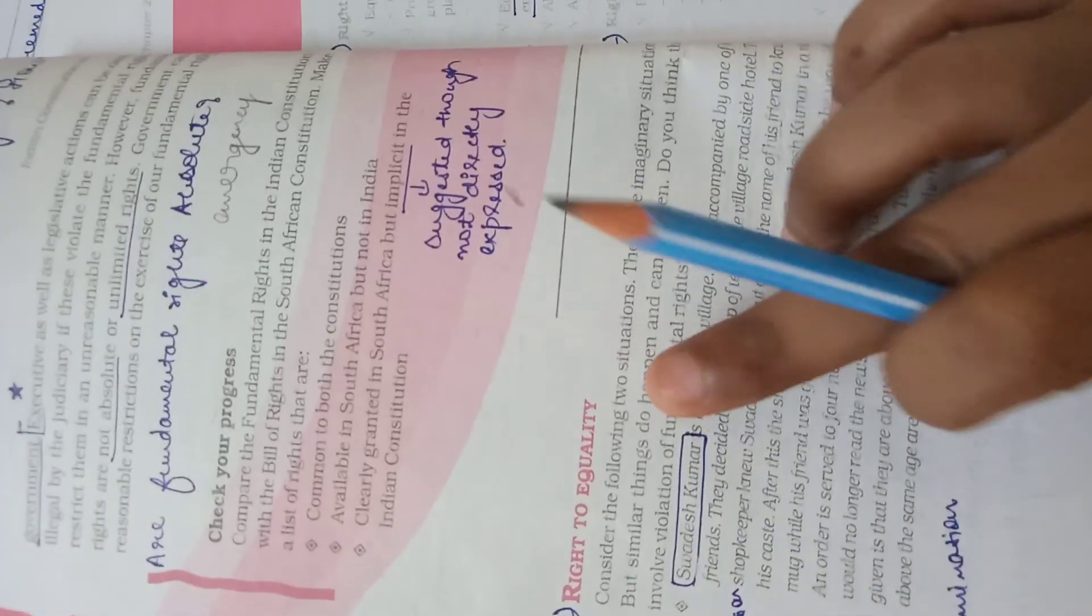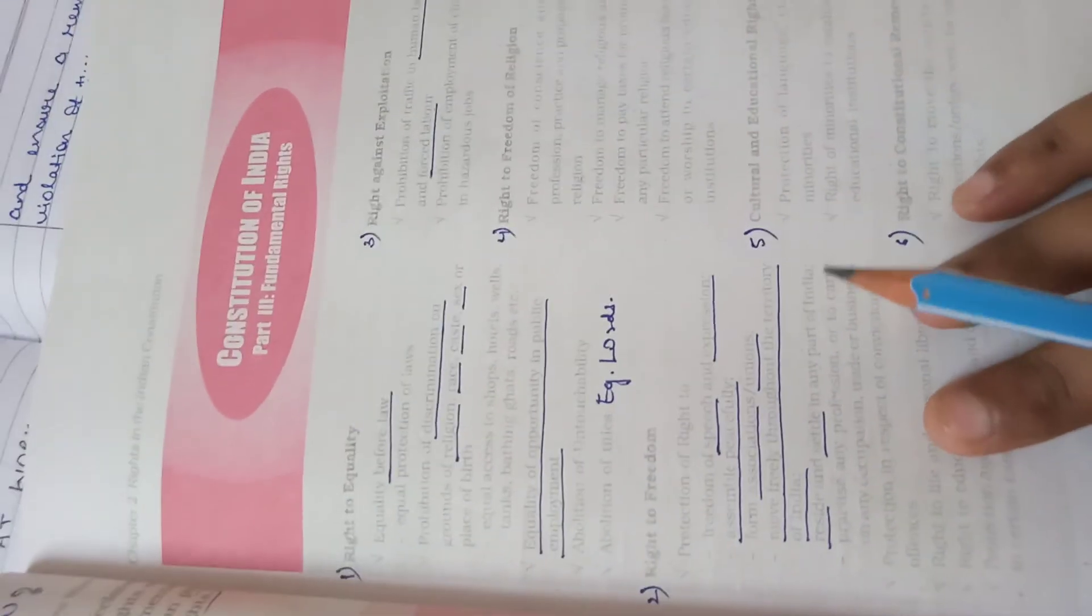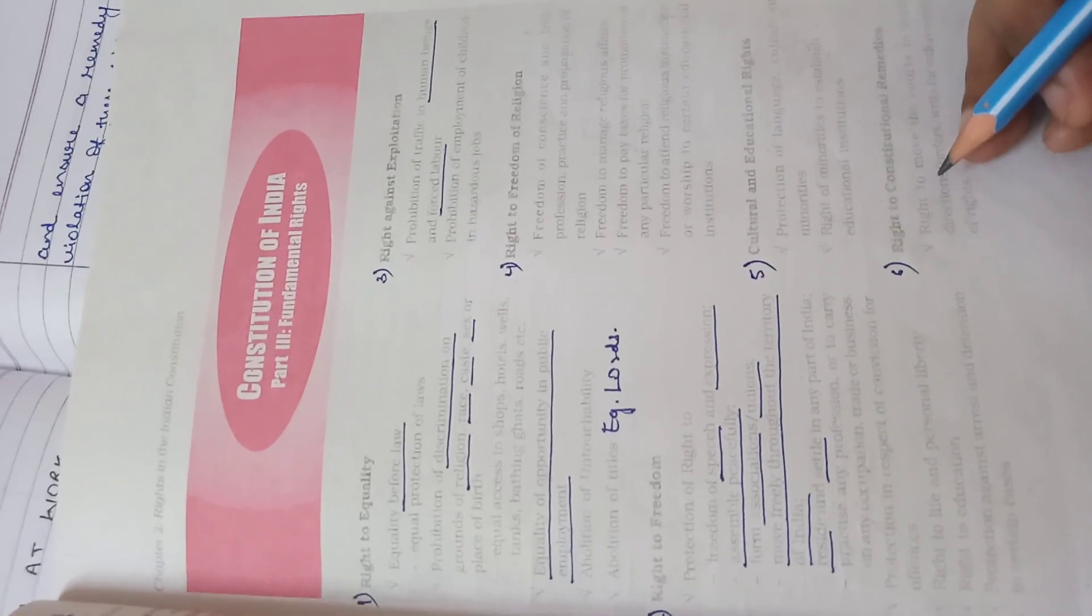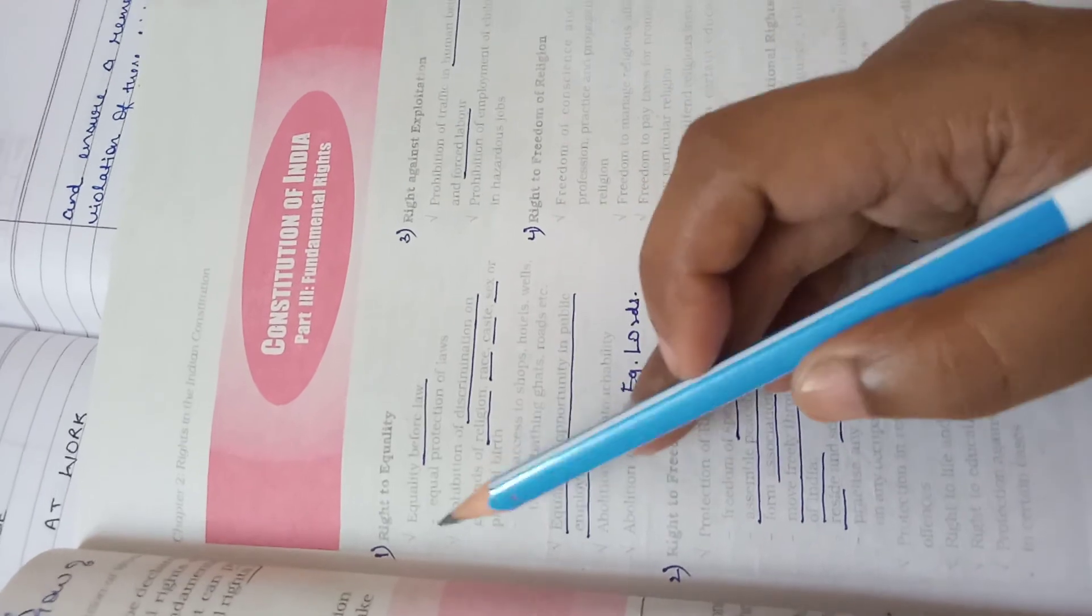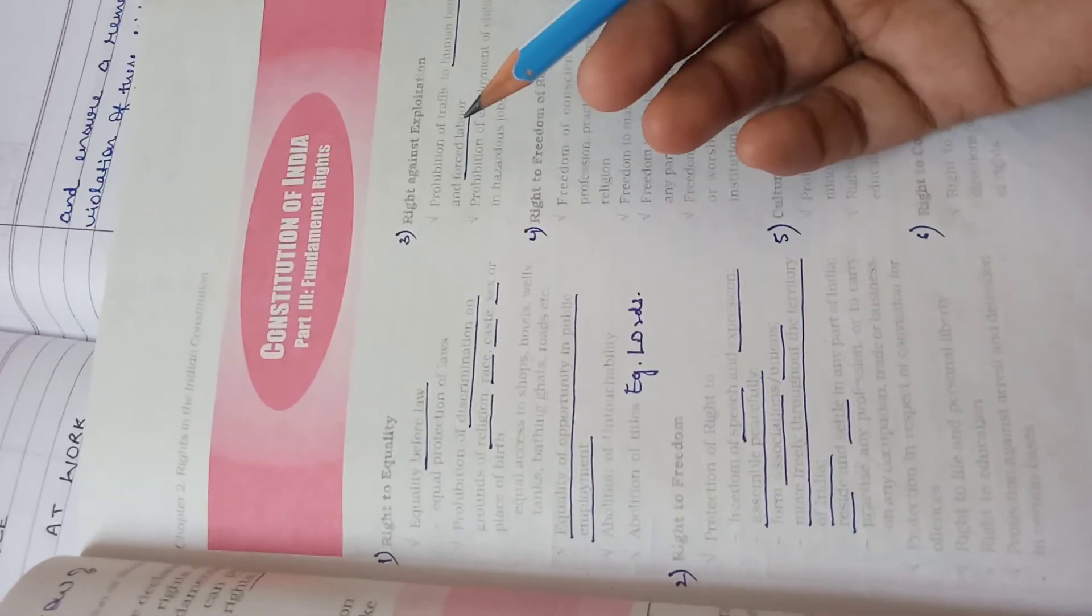Before I start with this right, I want to show you the next page. In this page all the six rights are given and very important key points are given. If you will go through these points, you won't need to memorize much as these comprise of everything. Since in my book this page is very light, you can check your books from Google or PDF online.